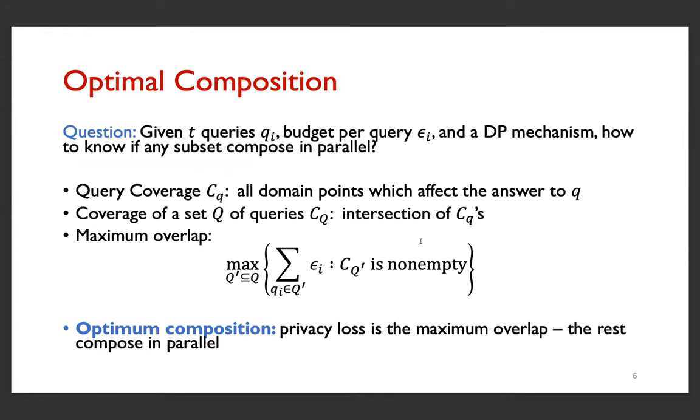The question then is that if we're given some number of queries T, each with a different privacy budget and a fixed DP mechanism, how do we find out if any subset composes in parallel? In order to answer that question, we define the notion of maximum overlap, which is defined in terms of query coverage. For a single query, we define its coverage as all the domain points which, if removed, would change the answer to that query.